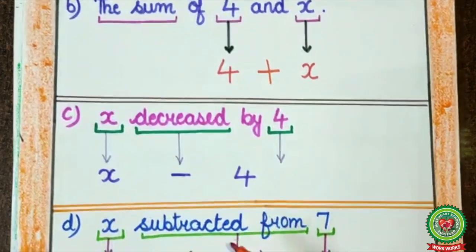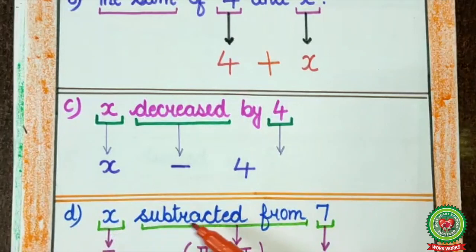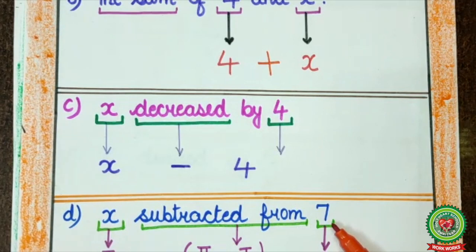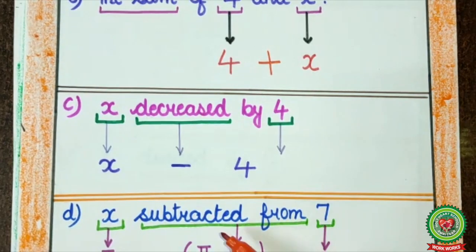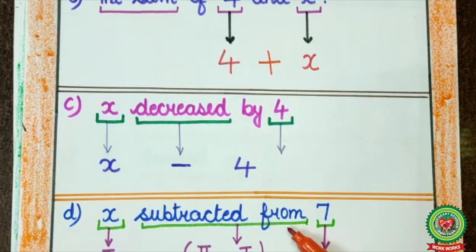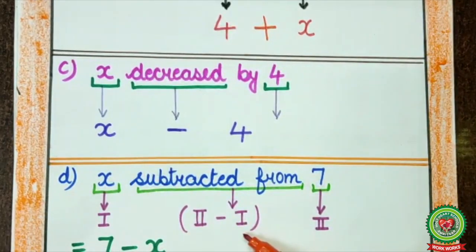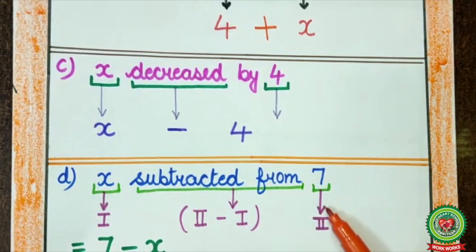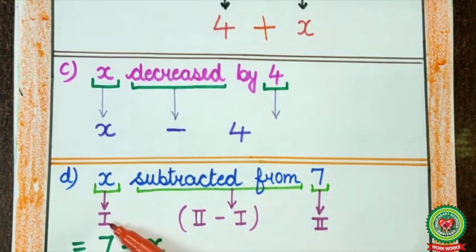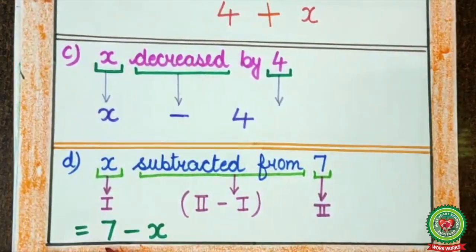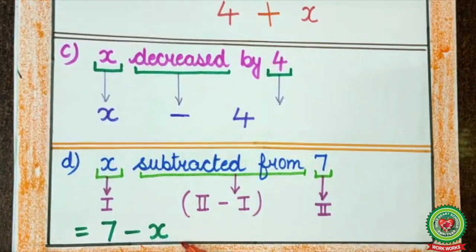Next, X subtracted from 7. Now, here students must remember, the phrase 'subtracted from' indicates second number minus first number. So, here the second number is 7 and the first number is X. So, what will come? 7 minus X.